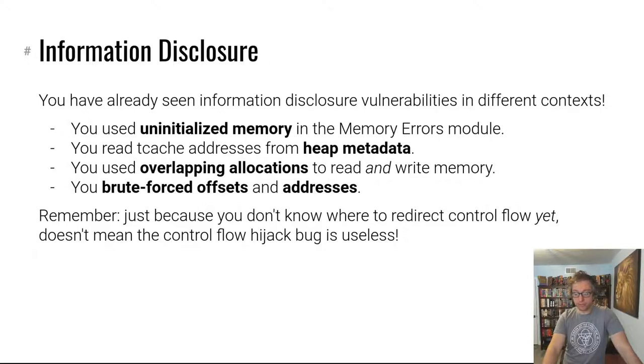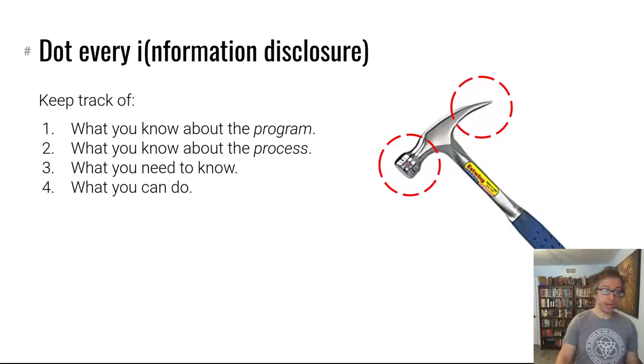The takeaway is, if there's a bug that you can use to hijack control flow, for example, but you don't know where program instructions are to hijack control flow to, doesn't mean the control flow bug is useless. It just means you can't use it yet and you need to get more information, for example using an information disclosure vulnerability that you find in that program.